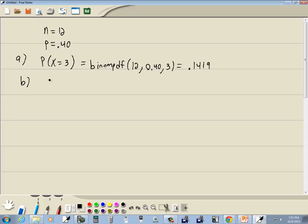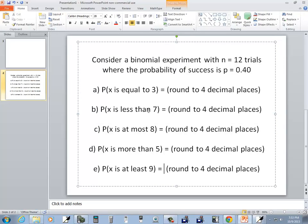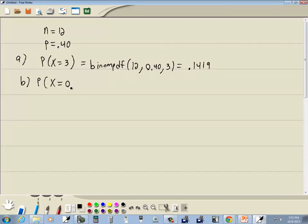Part b: probability x is less than 7. Let's list out what that means. That means 0, 1, 2, 3, 4, 5, and 6. Less than 7 does not include 7. When you're going from 0 up to a number, then this is going to be binomCDF.